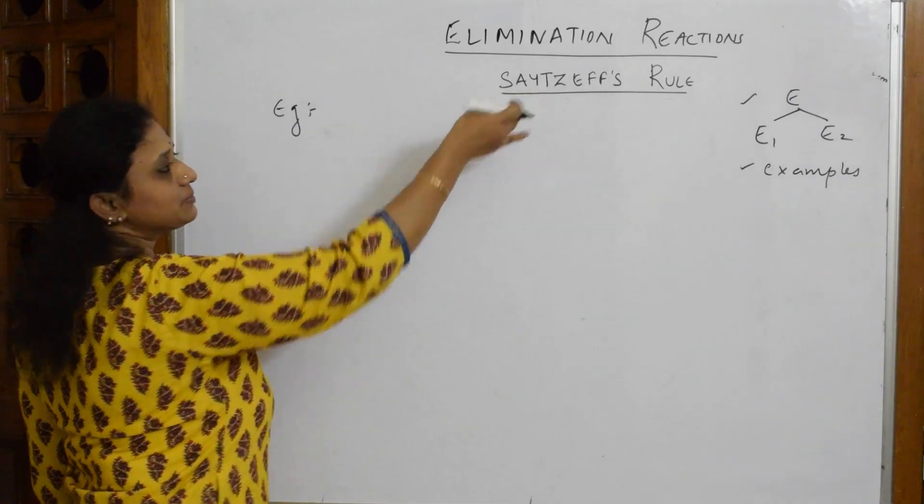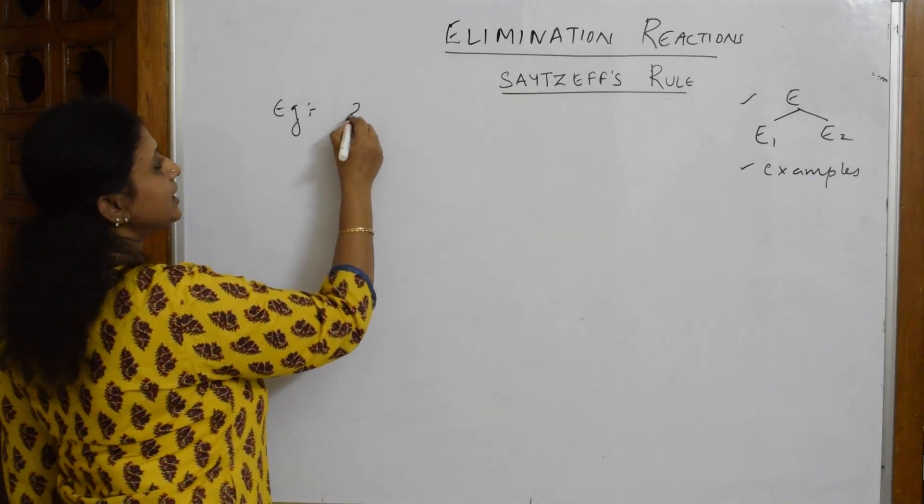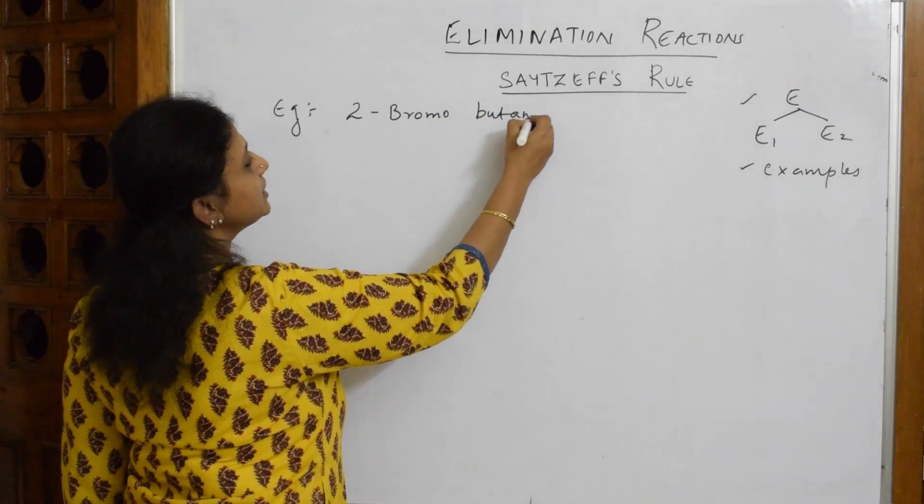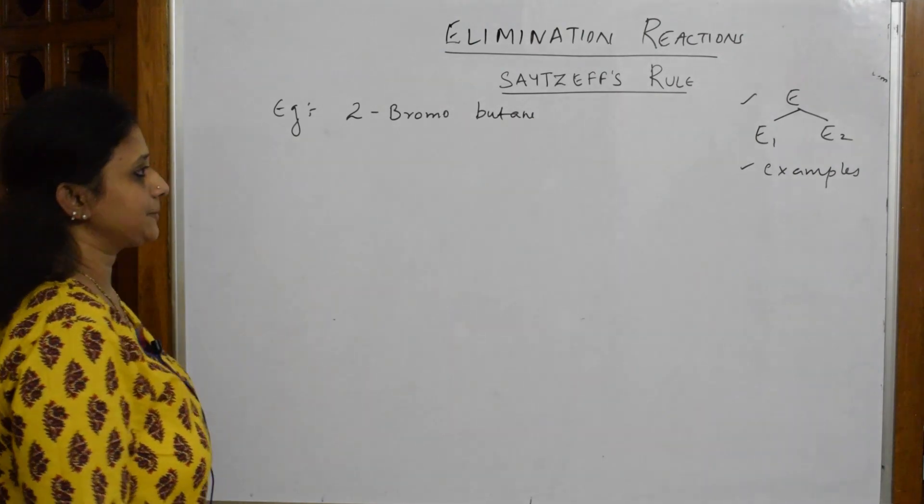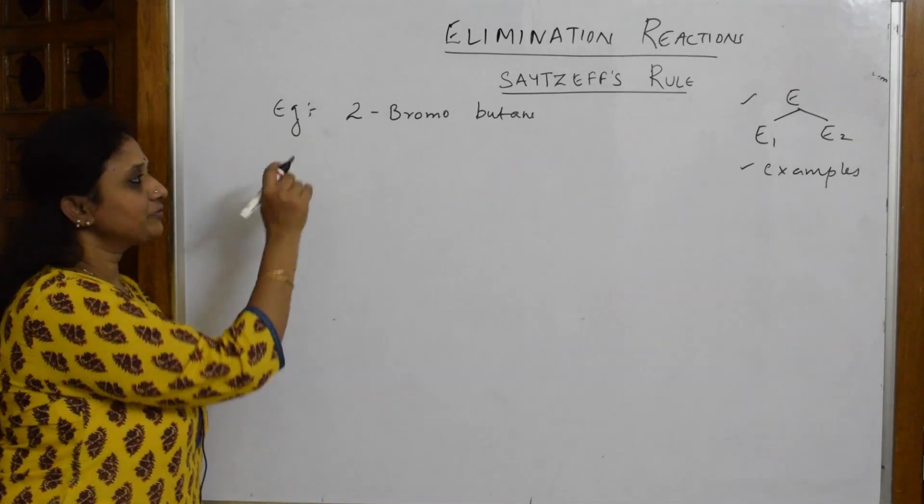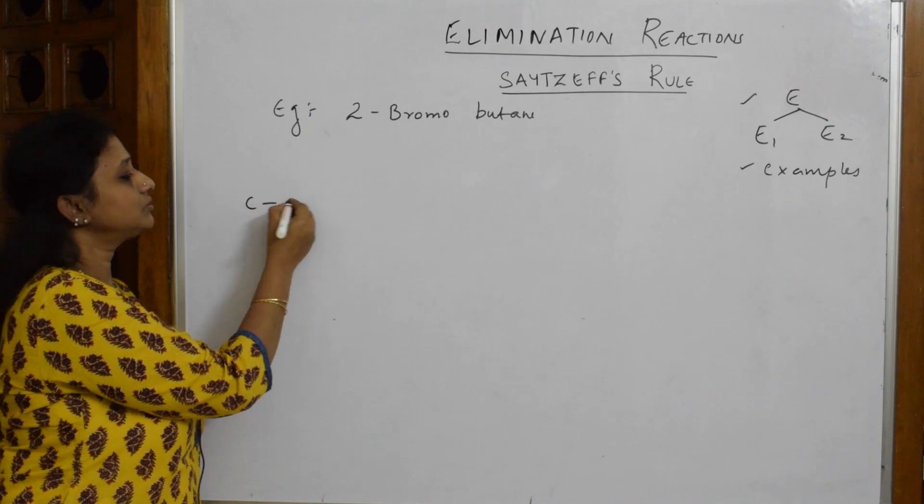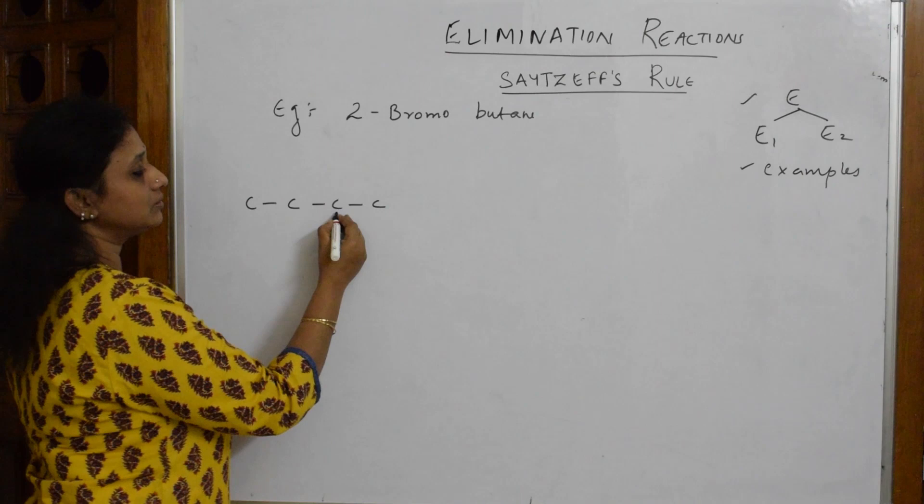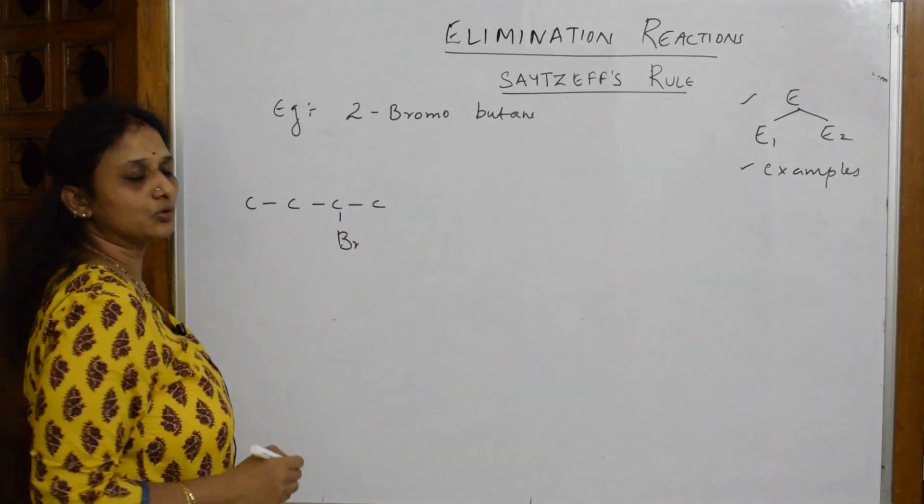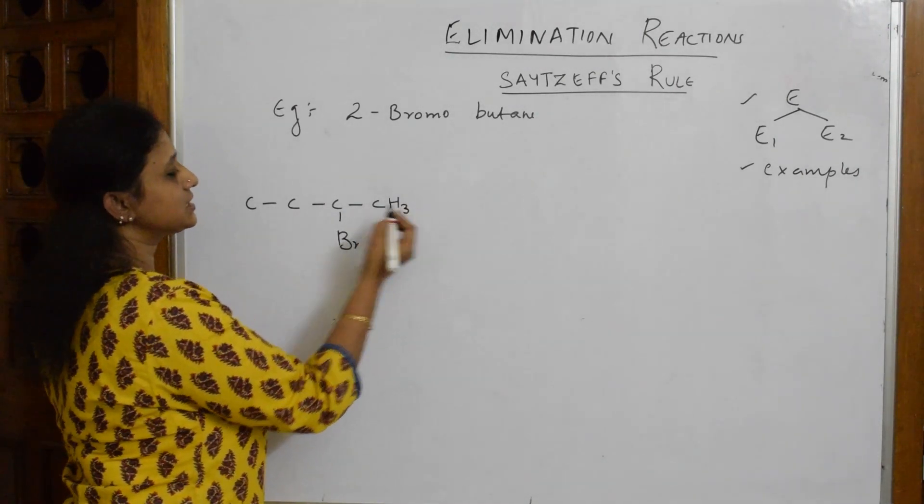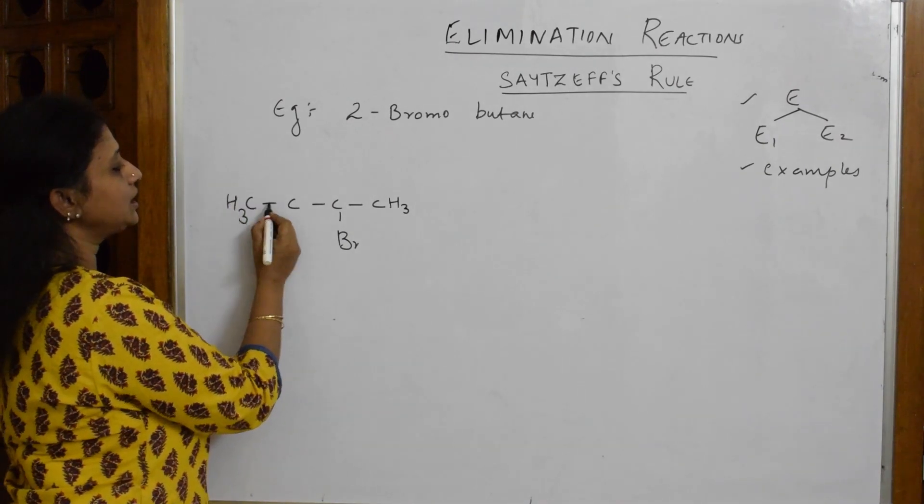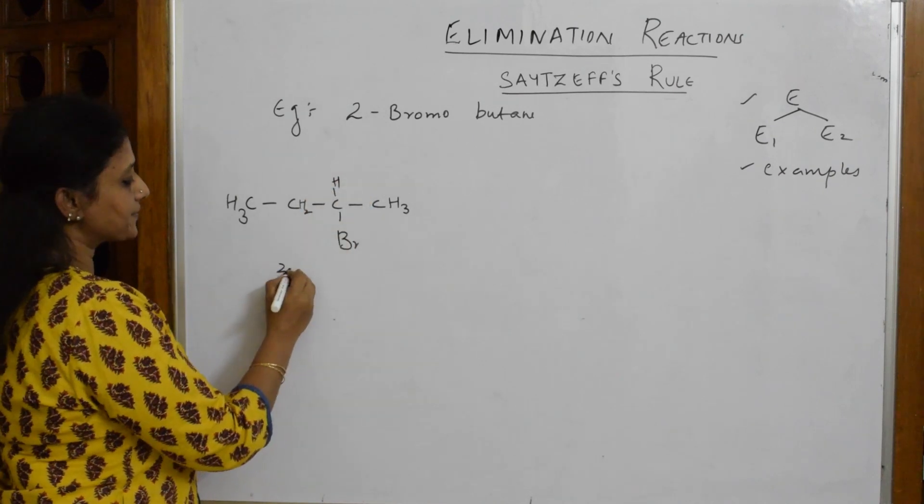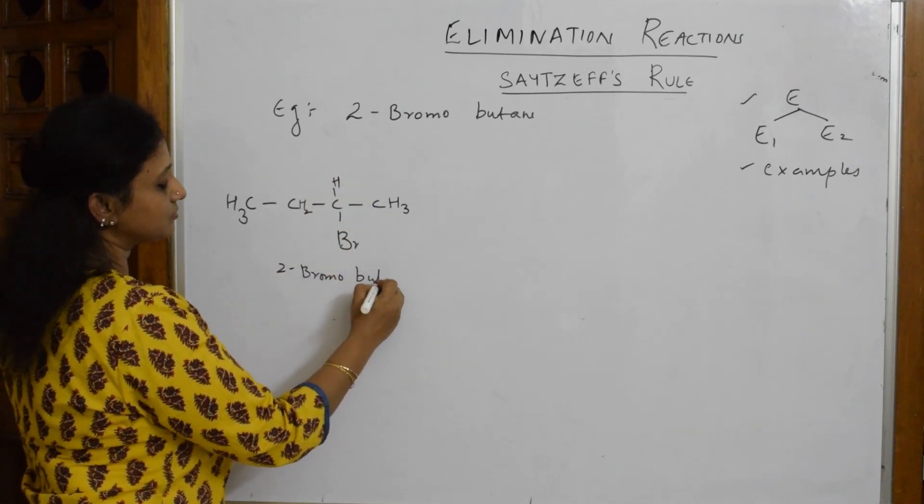to give a clear explanation for Saytzeff's Rule. Let me take 2-bromobutane. First, let me write the structure - four carbons. They've given me 2-bromobutane, so if I start from here, this is the second carbon with Br. So CH3, this is also CH3, and H. This is my 2-bromobutane.